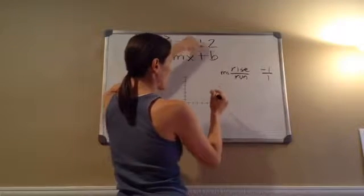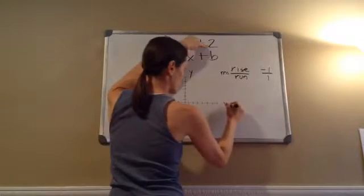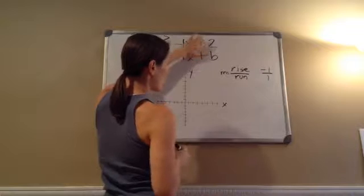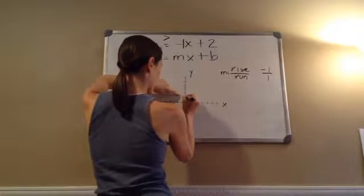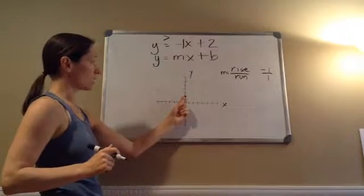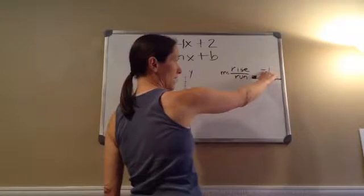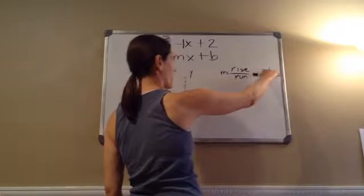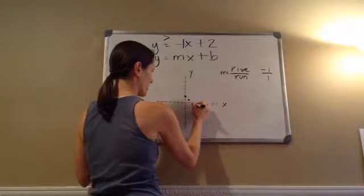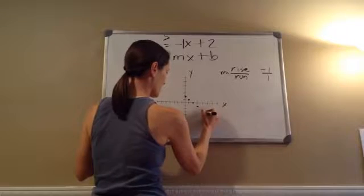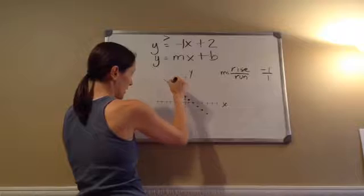Your b is where you place your dot on the y-axis. This is my y-axis, this is my x-axis. So on my y-axis, I'm going to place a dot on positive 2, right here. Then I'm going to do my rise and run — I'm supposed to go down 1 over 1 repeatedly — and as you can see, it makes this line right here.